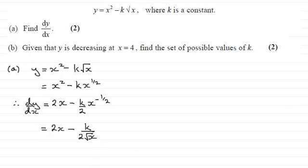So when it comes now to part B, this particular form is more useful, I feel. Because it says, given that y is decreasing at x equals 4, find the set of possible values of k.